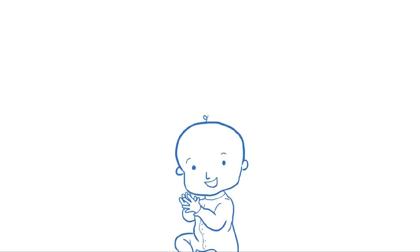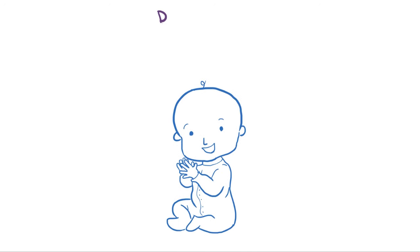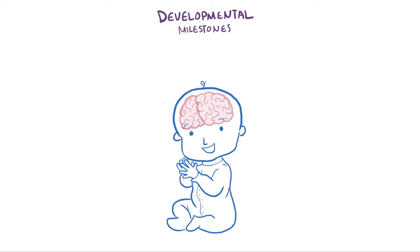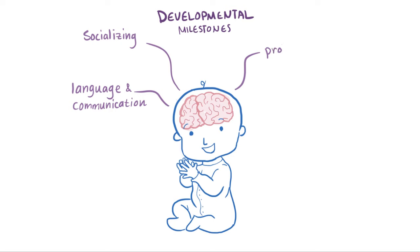Even though everyone develops at slightly different paces, almost everyone hits the same general developmental milestones and learns the same sets of skills at about the same time, more or less. These are things like language and communication, socializing, cognitive skills like problem solving, and physical milestones like walking, crawling, and fine motor skills, all of which progress as the brain develops.